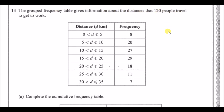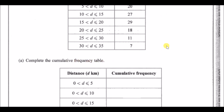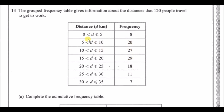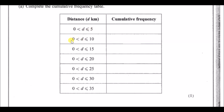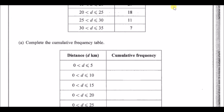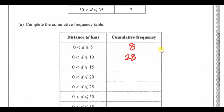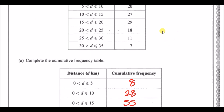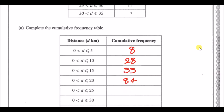Number 14: a grouped frequency table for distances traveled by 120 people. Cumulative frequency means adding as you go along. Starting with 8 people up to 5 km; up to 10 km add 20, making 28; up to 15 km add 27, making 55; up to 20 km add 29, making 84 — and continue adding 18, 11, and 7. The final total must be 120.